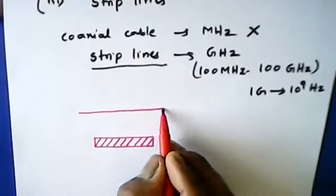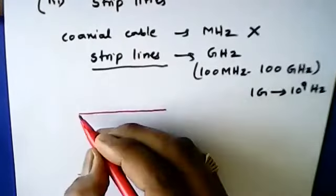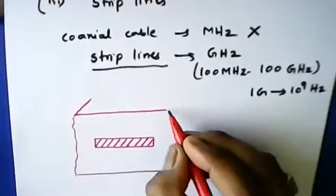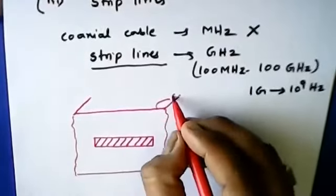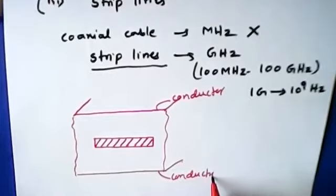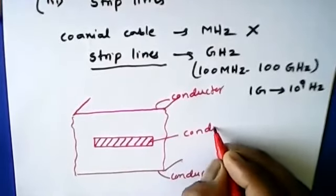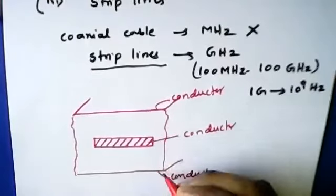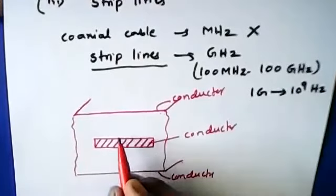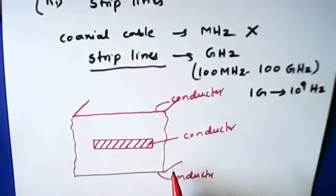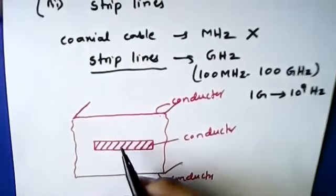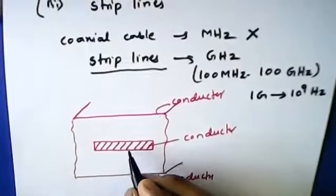There are two conductors in the strip line — these are the two conductors, which we can say are ground planes. These two can be considered as ground conductors or ground planes. This is the microstrip line we have, and its main intention is that it radiates its signals when propagated.